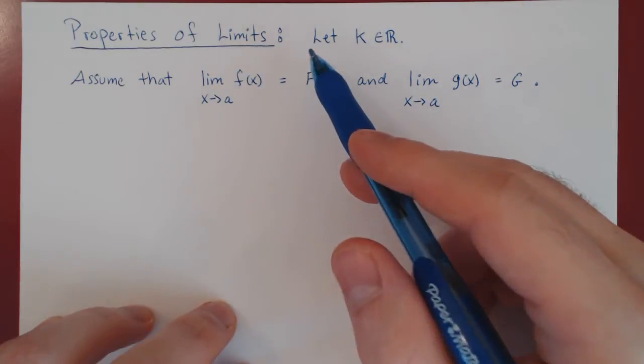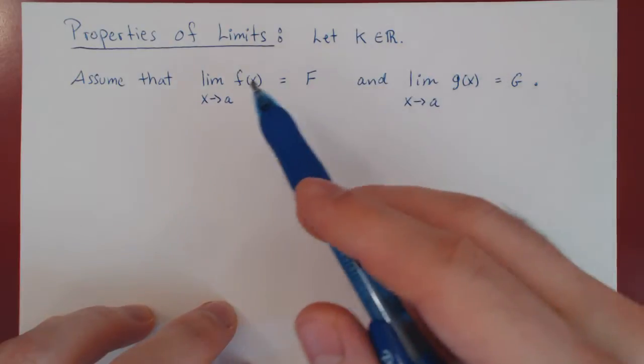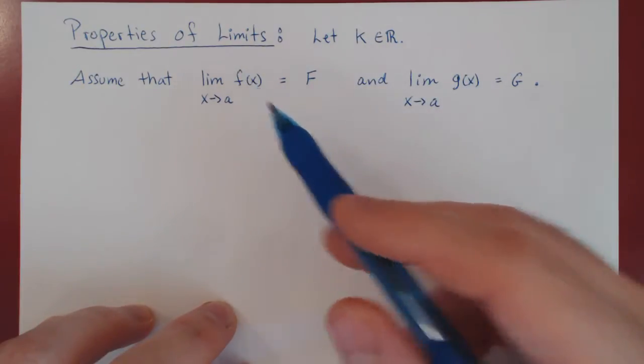So here are the ingredients. We let k be a fixed real number. We have two functions, f and g.